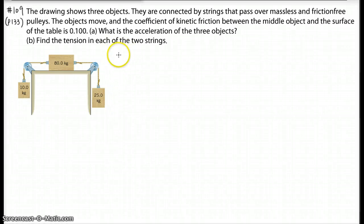Hello, here is question 109 on the textbook, page 133. The question, there's three objects connected by a cord, and then on each side, there's two pulleys connected.